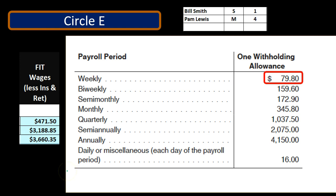We're now at the Circular E, which can be found on irs.gov. We go to the tables to calculate payroll withholdings. These are not the normal lookup tables — they're percentage calculations, typically used when wages are too high for the standard tables. When that number is too large to find in the tables, we use this percentage method. It's also valuable because it gives a better understanding of what the progressive tax system is and how these tiers work.